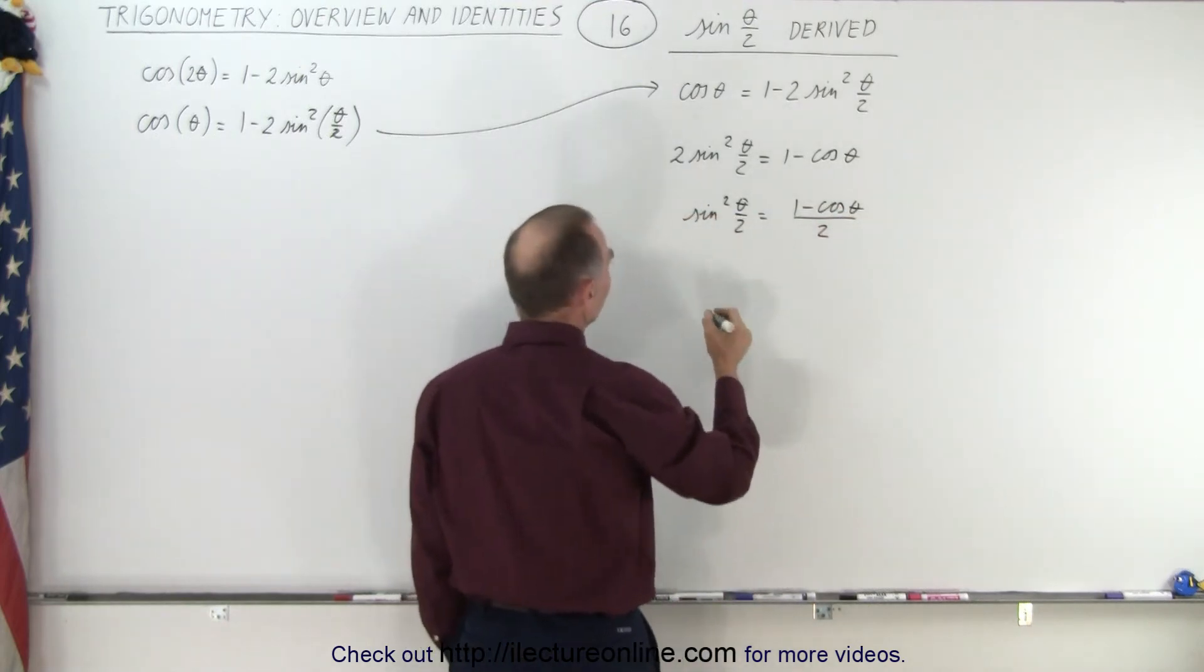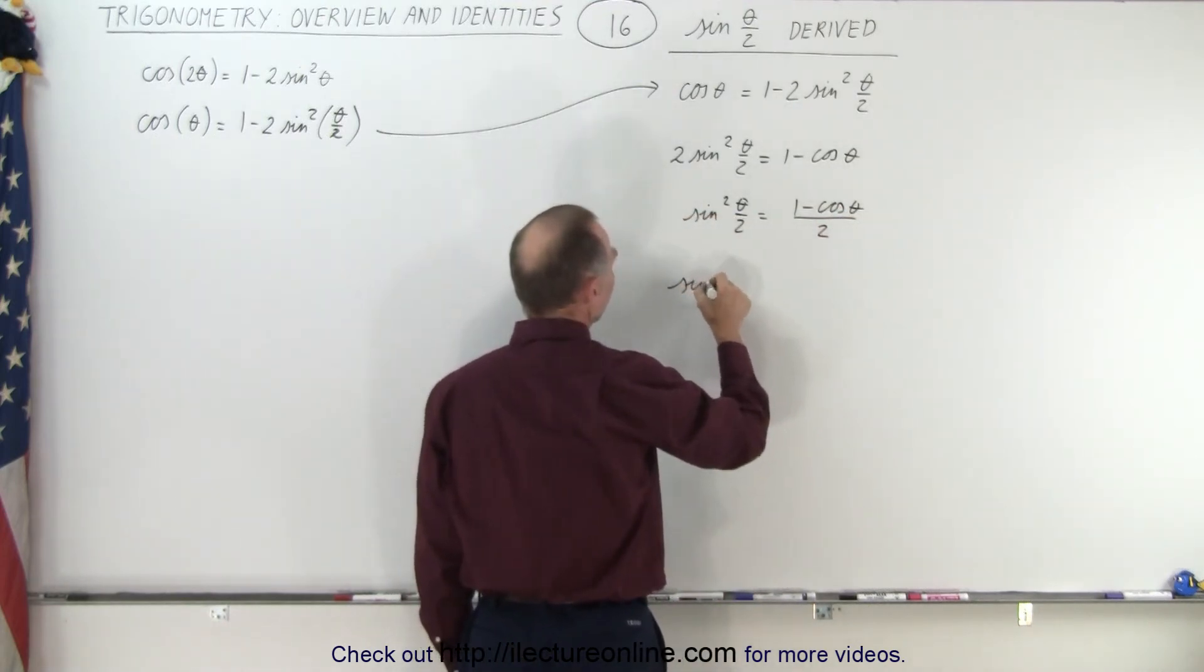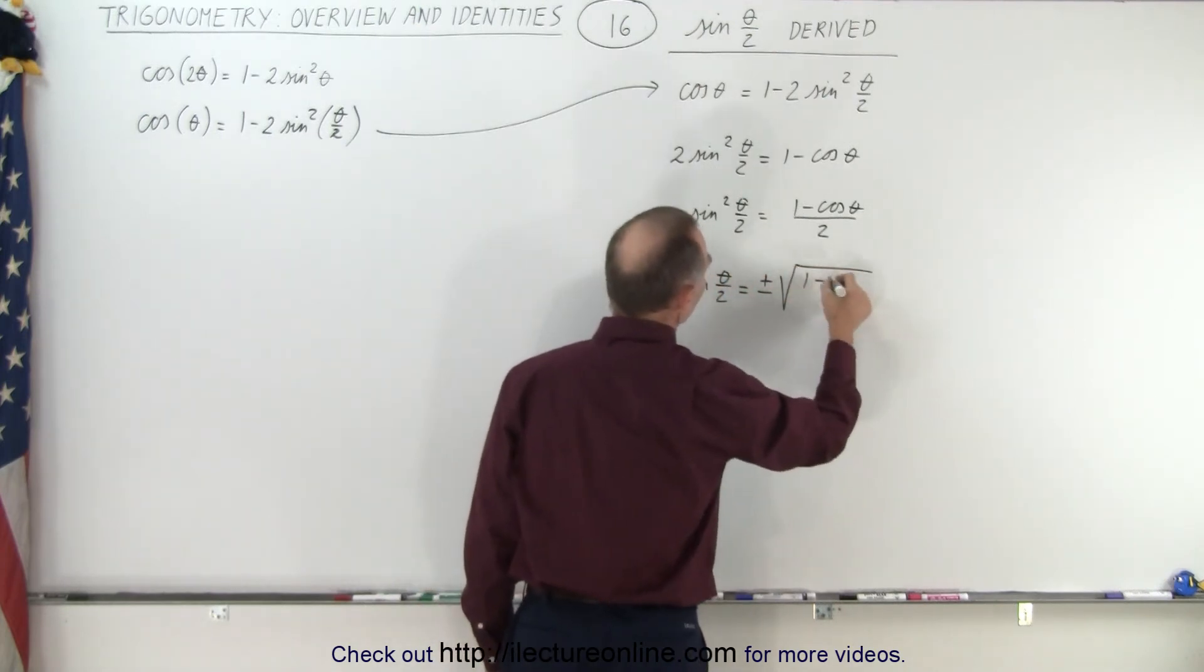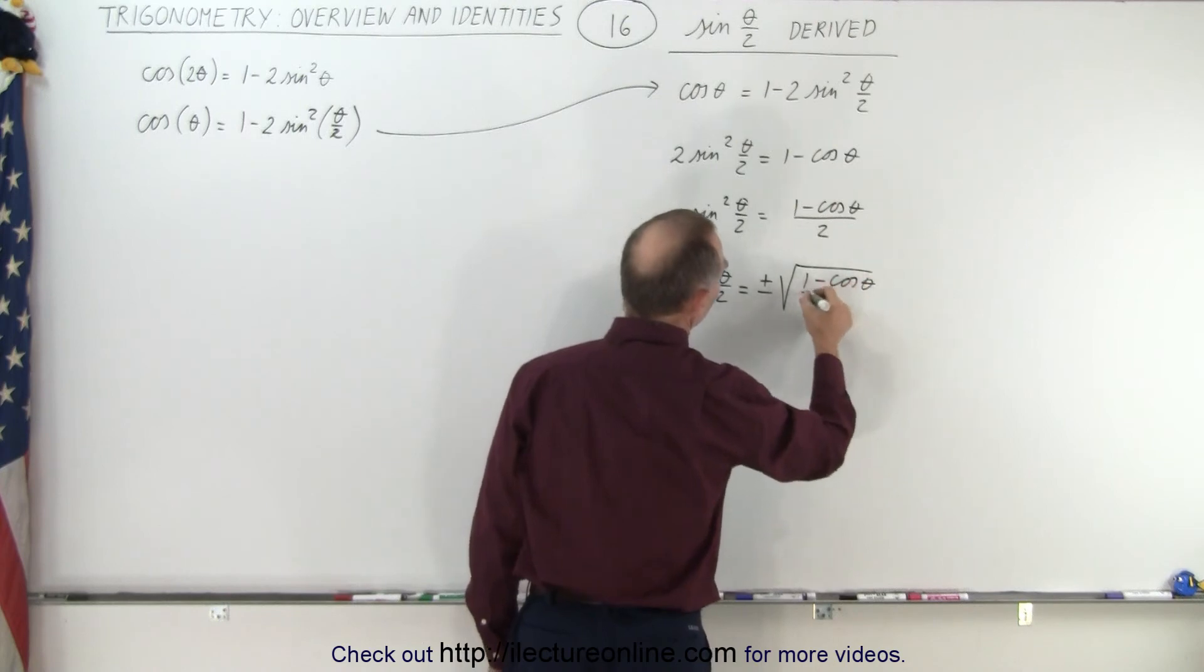And then if I take the square root of both sides, I end up with the sine of theta over 2 is equal to plus or minus the square root of 1 minus the cosine of theta divided by 2.